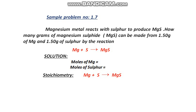Assalamu alaikum dear students, I am Miss Kiran. Last time we discussed sample problem number 1.6. Today I am going to discuss sample problem number 1.7. The statement of this problem states that magnesium metal reacts with sulfur to produce magnesium sulfide. How many grams of magnesium sulfide can be made from 1.50 gram of magnesium and 1.50 gram of sulfur by reaction?